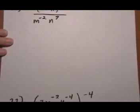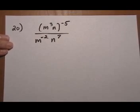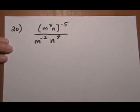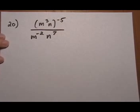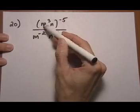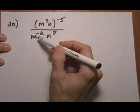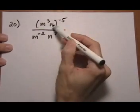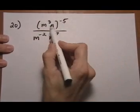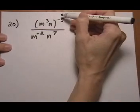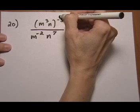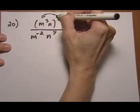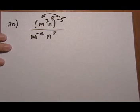Next is number 20. Okay, number 20 has a lot of stuff going on. So I notice that there are two different same bases. We've got m's, we've got n's. And that we can't hop right to the quotient rule because we have stuff going on in the numerator. So the first thing we're going to want to do is use a power rule that tells us that two bases being multiplied all raised to a power both get that power. So exponents distribute over multiplication.